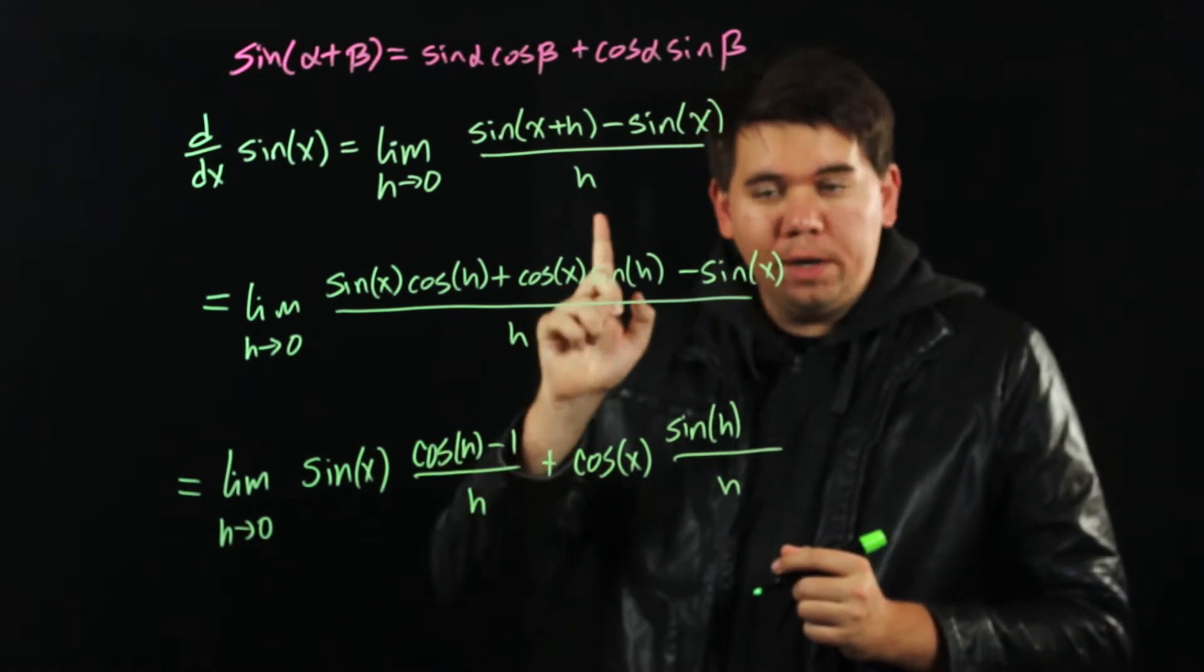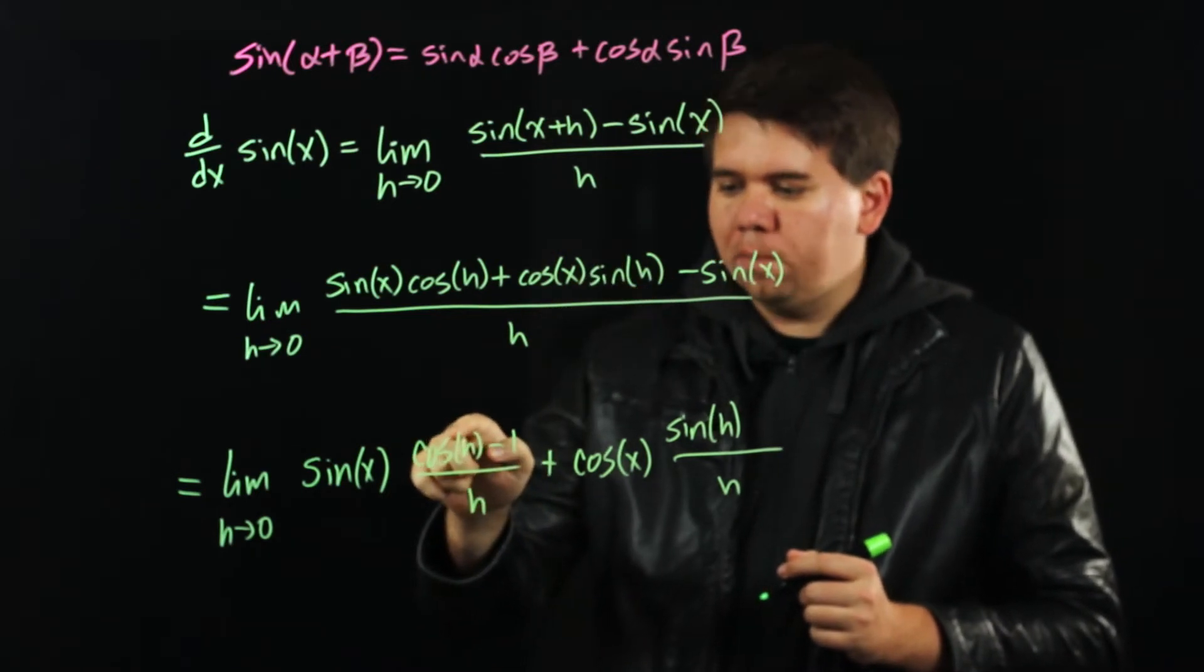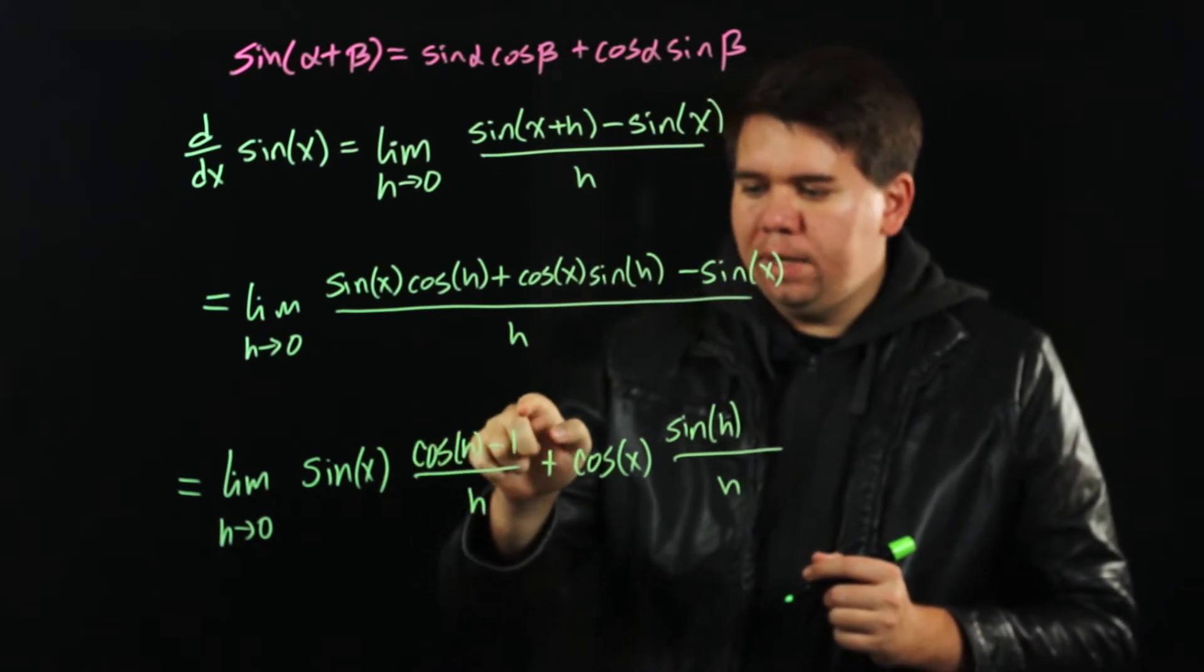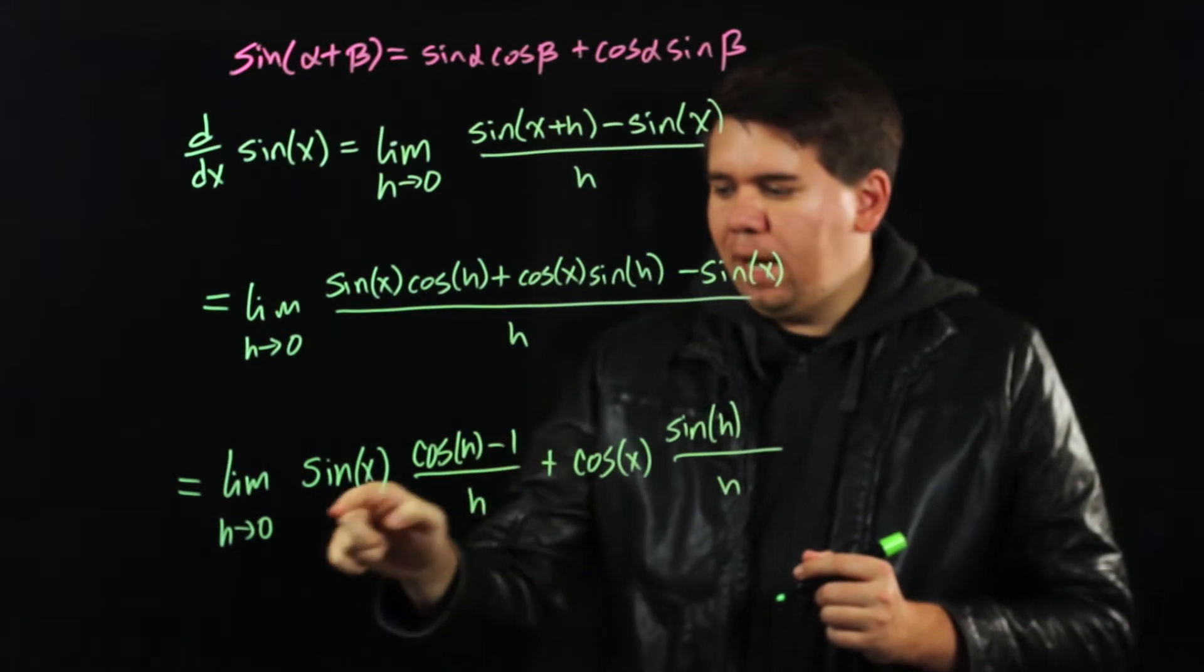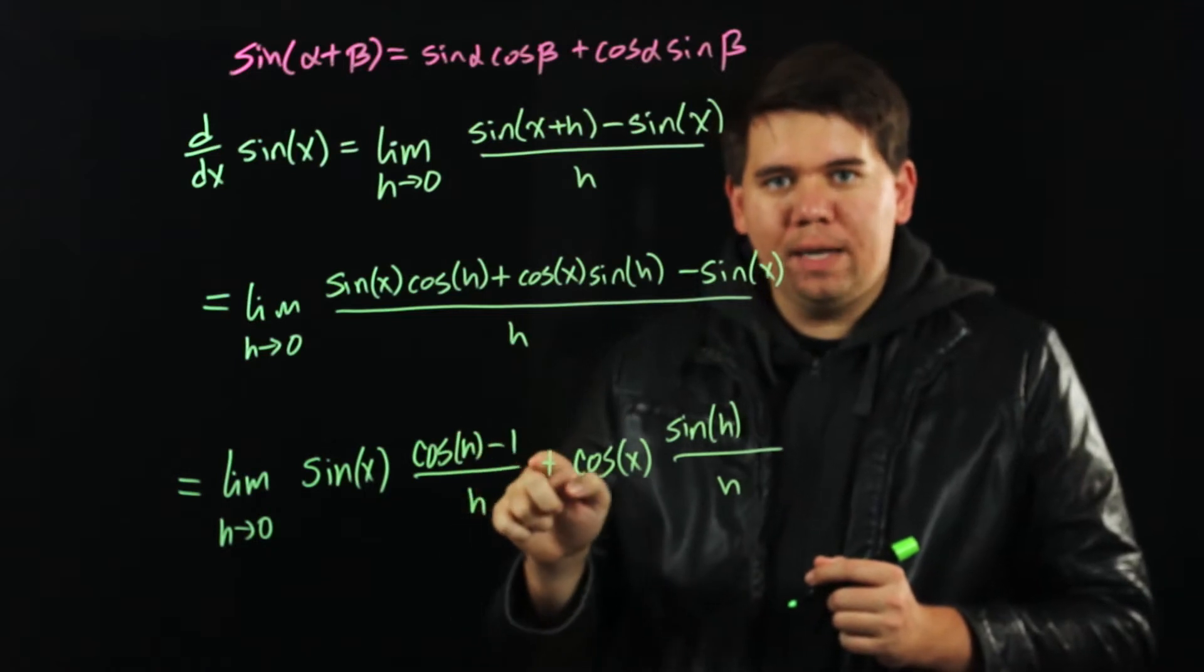Because as h goes to 0, cosine of h goes to 1. Cosine of 0 is 1, it's a continuous function. So this is going to go to 1. So you get 1 minus 1 divided by h going to 0. This is going to go to 0 divided by 0.